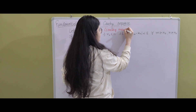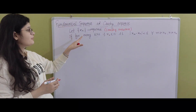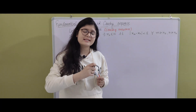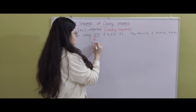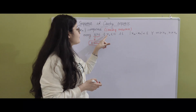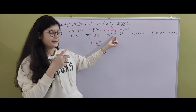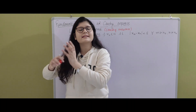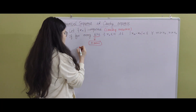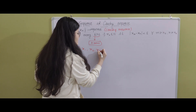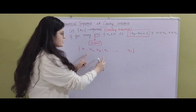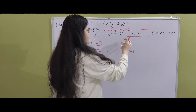We call {a_n} a Cauchy sequence when: for every epsilon greater than zero — and epsilon is just any value greater than zero, like 0.1 or any positive number — there exists an n_naught belonging to the natural numbers ℕ, such that |x_m − x_n| < epsilon, for all m, n greater than or equal to n_naught.